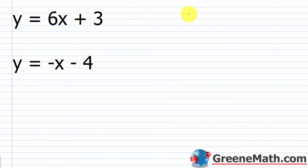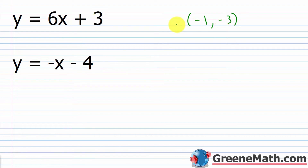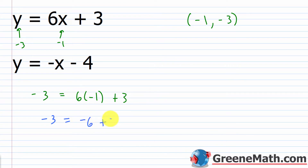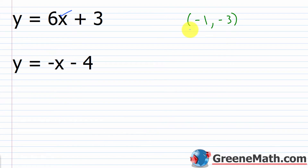Our ordered pair is negative 1 comma negative 3. These two equations together represent a system of linear equations — sometimes called a linear system. The goal is to find a solution that works in both equations. Let's verify: for y = 6x + 3, plug in y = -3 and x = -1: negative 3 equals 6 times negative 1 plus 3, which gives negative 3 equals negative 6 plus 3 equals negative 3. It works.